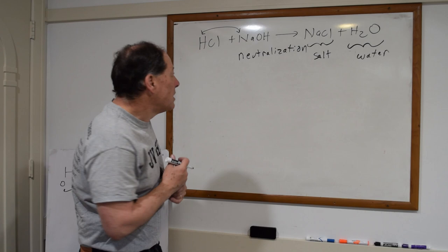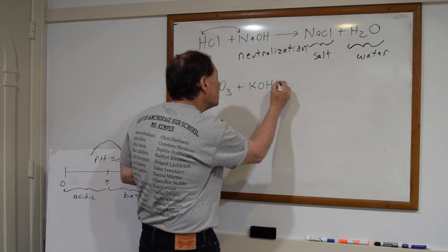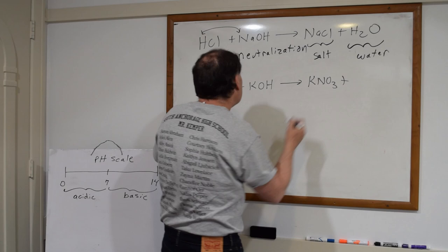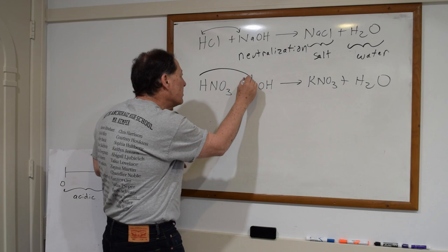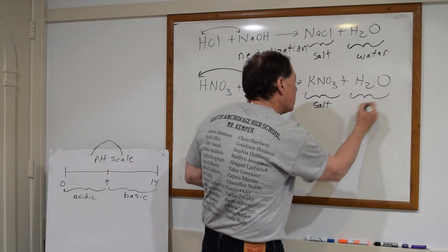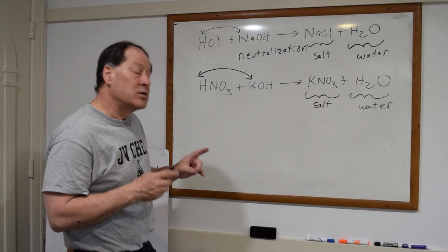I could have a different acid-base neutralization: nitric acid reacting with potassium hydroxide. That's an acid with a base. Do the double displacement reaction — the hydrogen and potassium switch places — and you form KNO₃ plus water, meaning potassium nitrate and water. So again, a salt and water. That's what always forms in an acid-base neutralization reaction: water and a salt. We call it neutralization because water is a neutral substance. Next video we'll talk about pH.